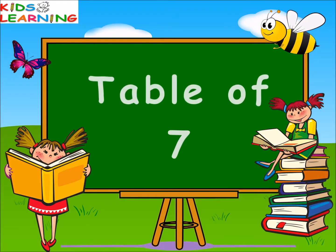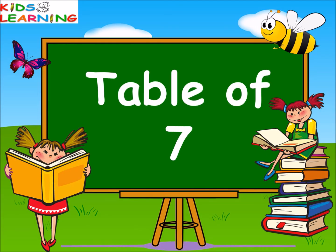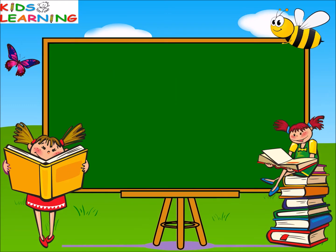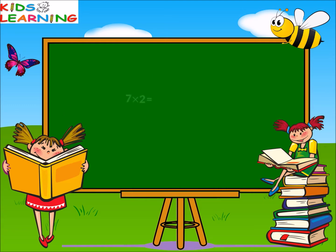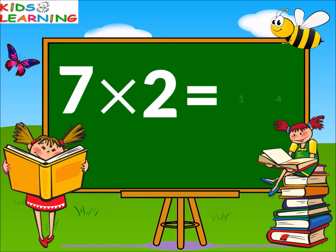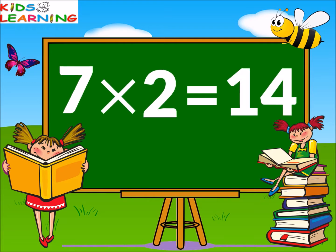Table of seven. Seven ones are seven. Seven twos are fourteen.